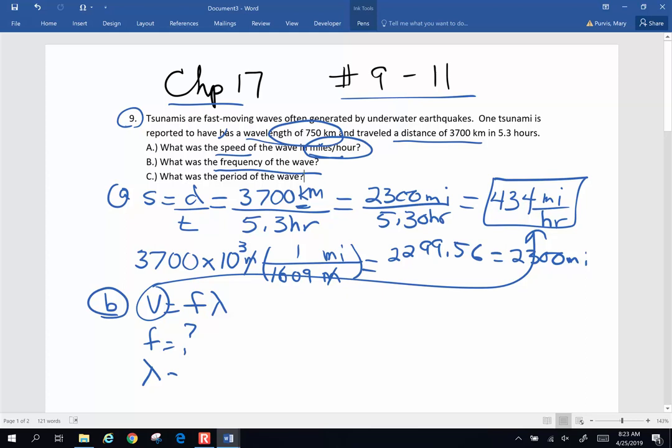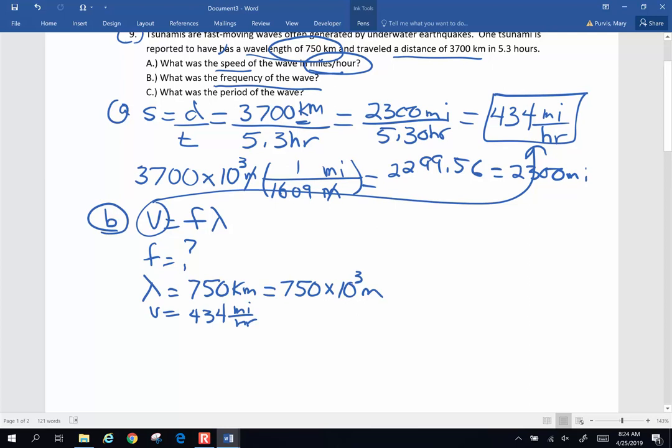The wavelength is reported to have a wavelength of 750 kilometers. So 750 kilometers, kilo is times 10 to the third. So 750 times 10 to the third meters. Before I can use this equation, that velocity that I have from up above, 434 miles per hour, I've got to take that beast and put it back into meters per second. So let's convert that right here. Get rid of miles, go back to meters.